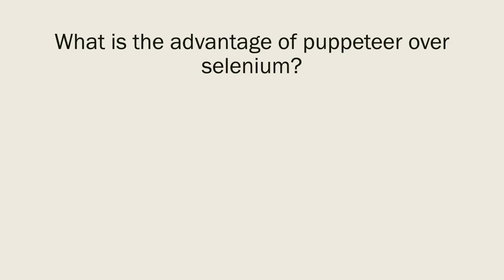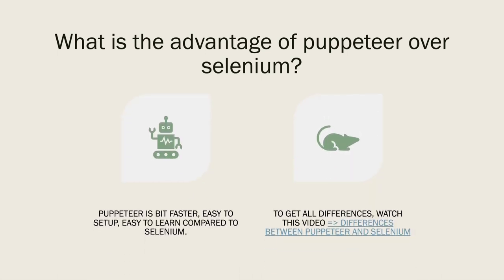What is the advantage of Puppeteer over Selenium? This is a very common question since many organizations using Puppeteer are moving from Selenium. You can say that Puppeteer is faster than Selenium, easier to set up and learn — it has basically one page class to learn and basic operations can be done quickly compared to Selenium. There are other advantages and disadvantages as well.